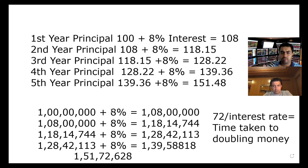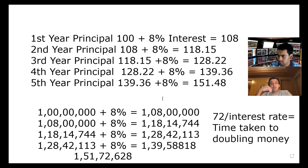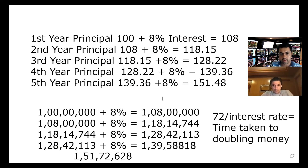You've understood the concept — the 8th wonder of the world, which is compounded interest. You've absolutely understood what Warren Buffett calls the 8th wonder of the world, which is compounded interest. The base, plus the interest — and then that total becomes the new base for the next period.